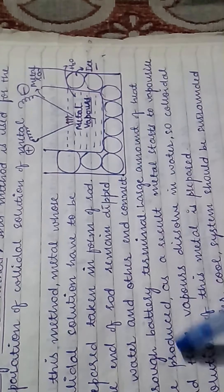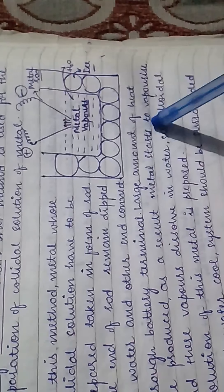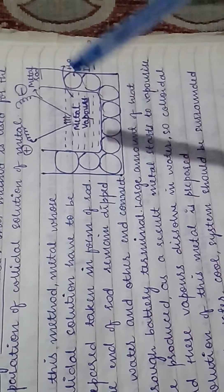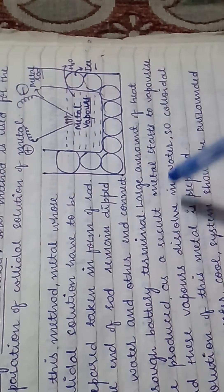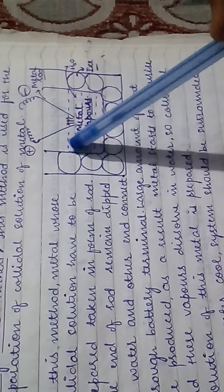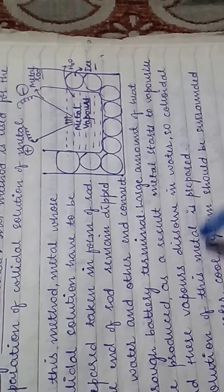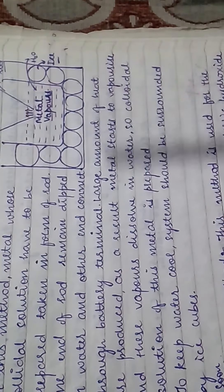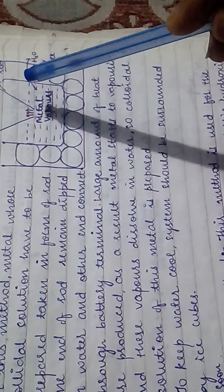A large amount of heat is produced. As a result, the metals start to vaporize. These metal vapors dissolve in water, and thus the colloidal solution of the metal is prepared.